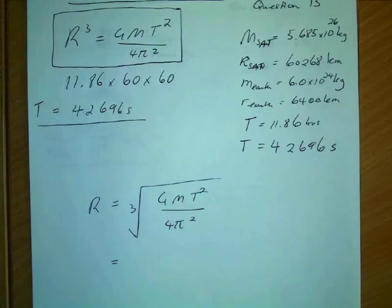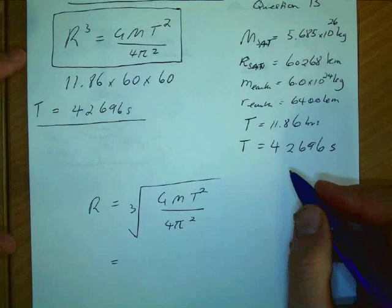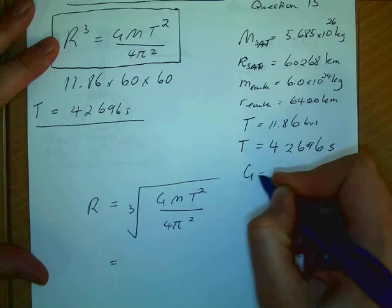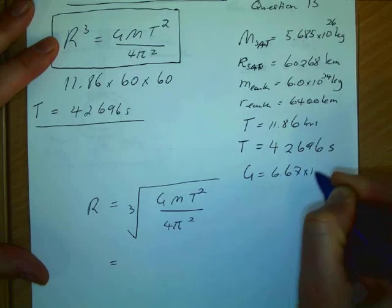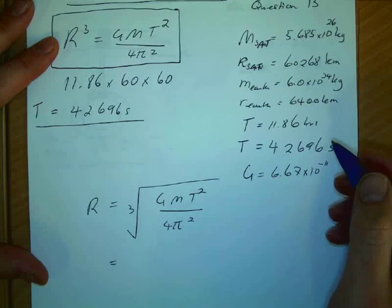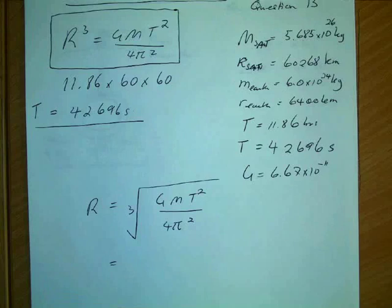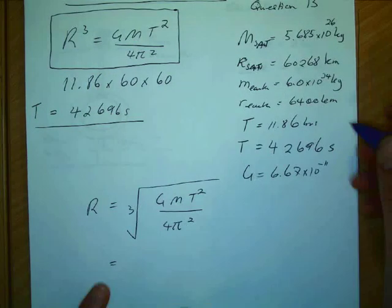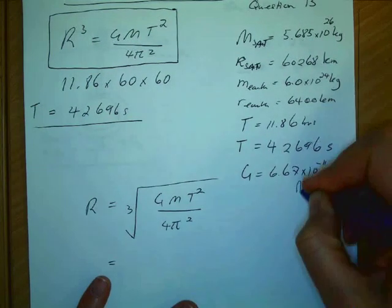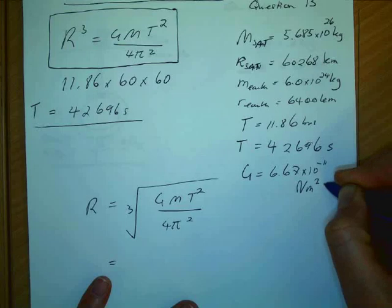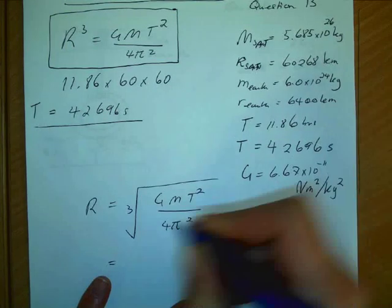So G is the gravitational constant, which is 6.67 times 10 to the negative 11. What's the units for G? Newton meters squared per kilogram squared. Newton meters squared per kilogram squared.